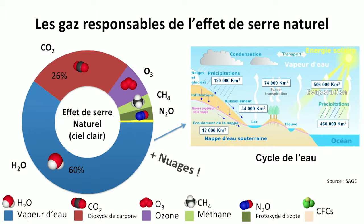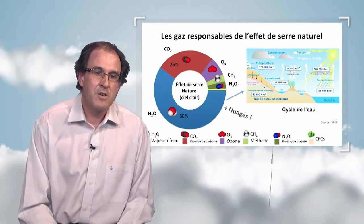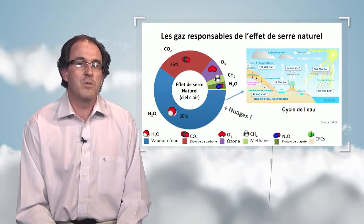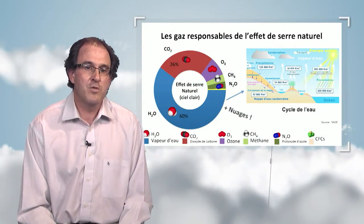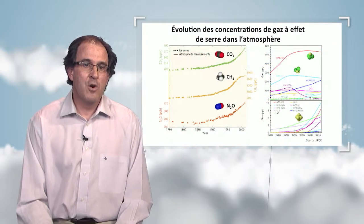The second gas is CO₂ at 26%, followed by ozone, methane, and nitrous oxide. This is under clear sky conditions, but clouds also play a role in the greenhouse effect when they are present.